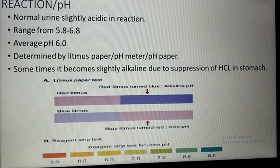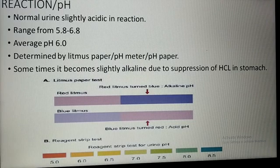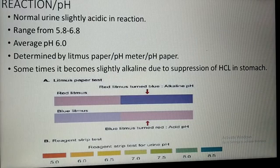On the litmus paper diagram, blue turning red indicates acidic urine, red turning blue indicates alkaline urine, and no color change means the litmus paper reading is neutral.